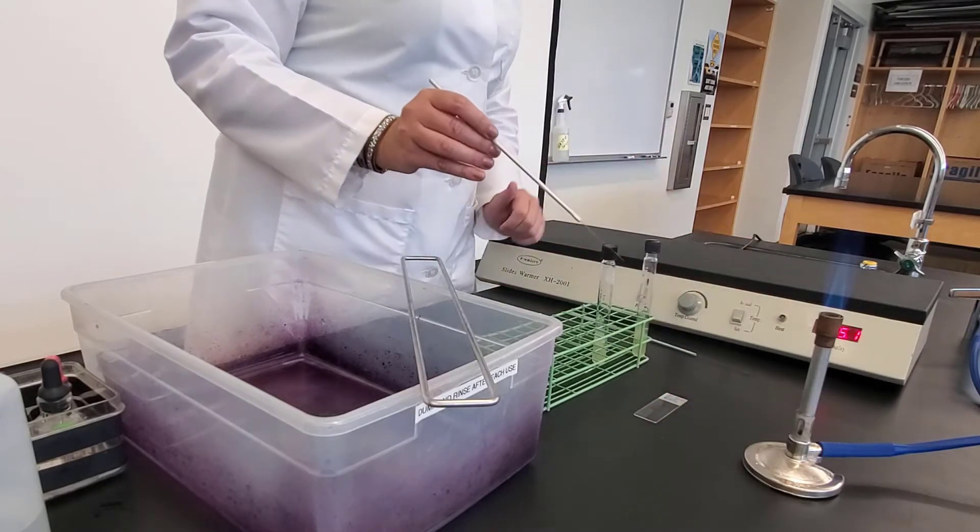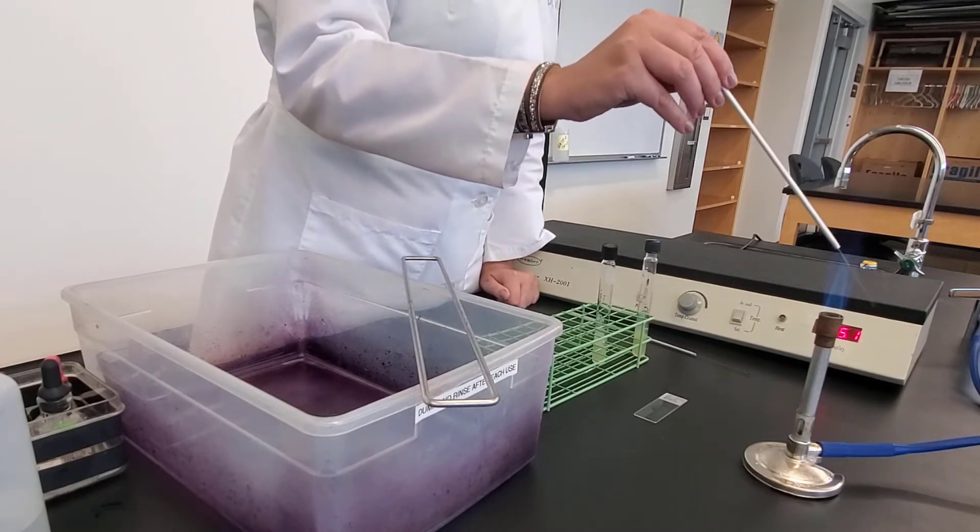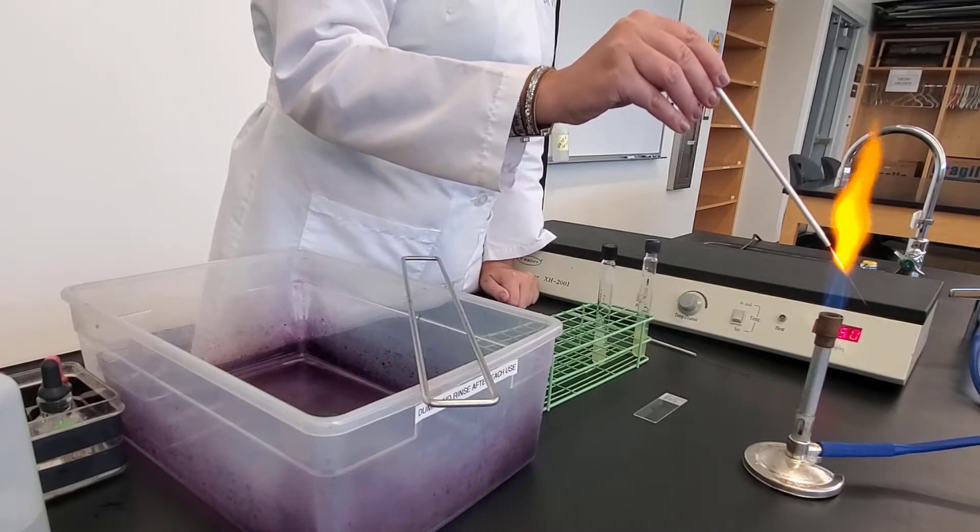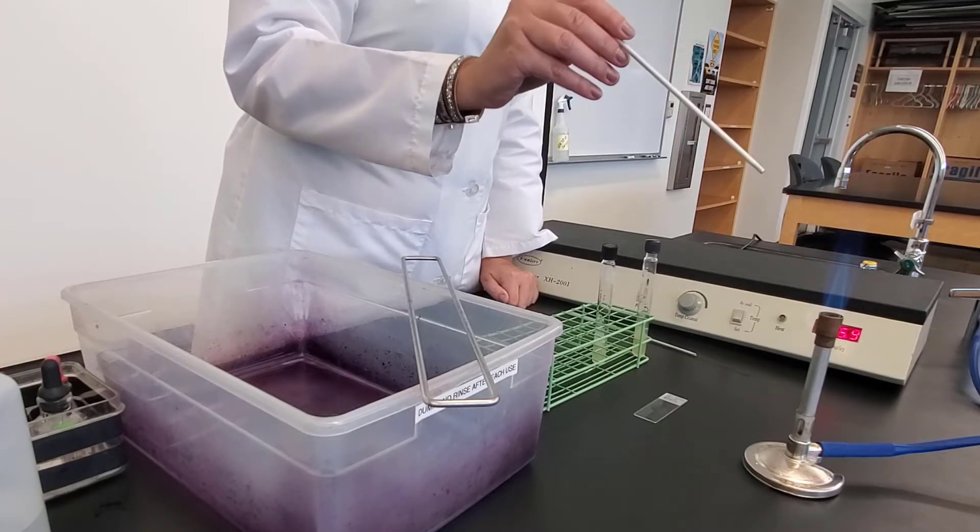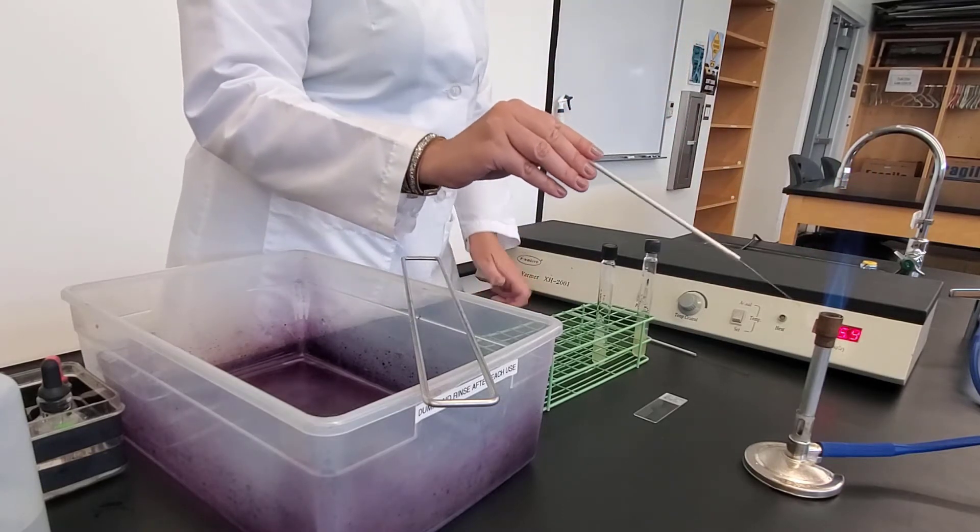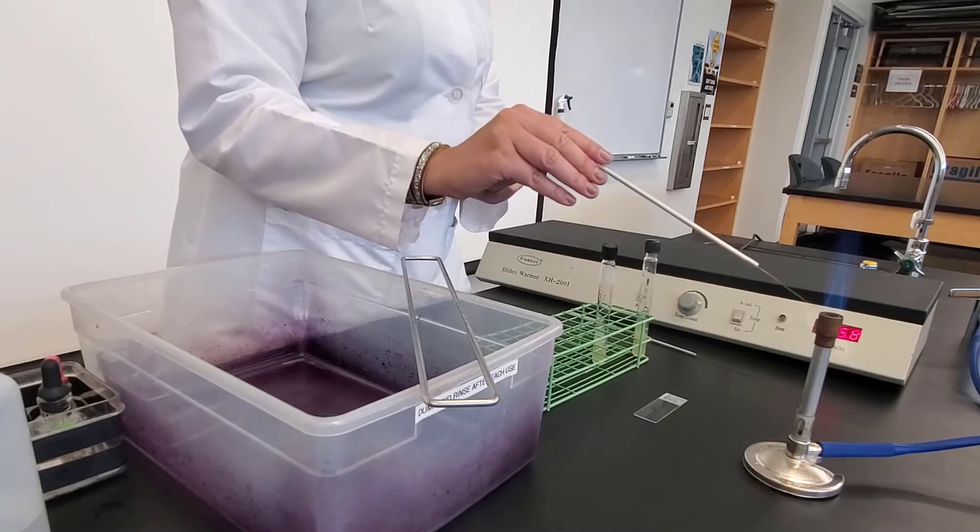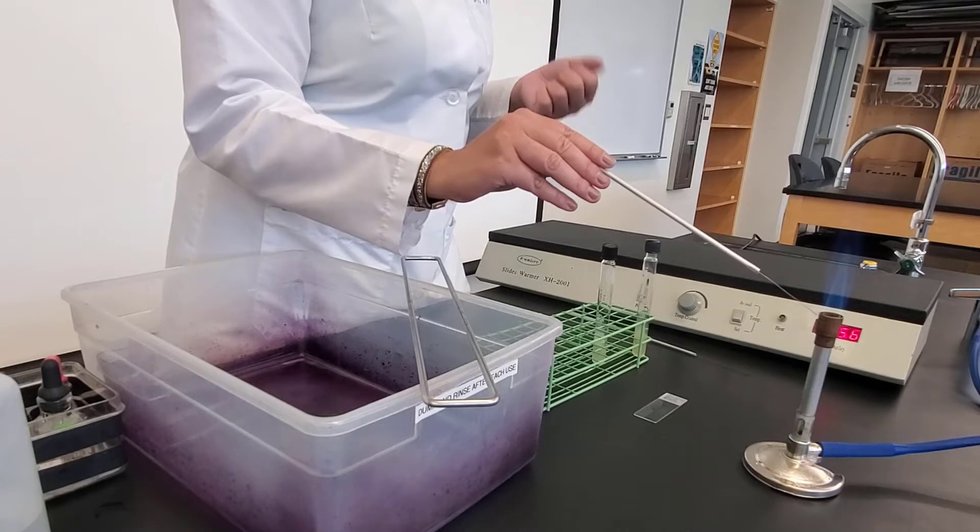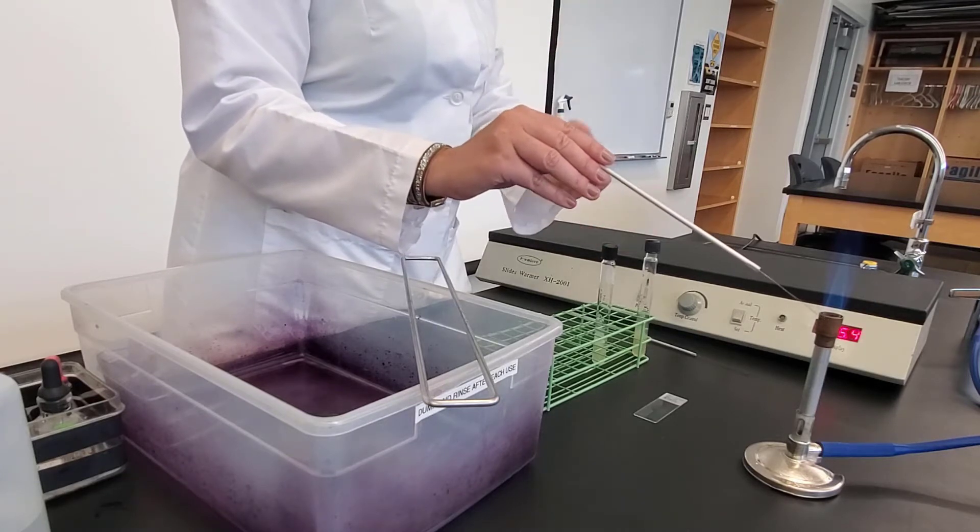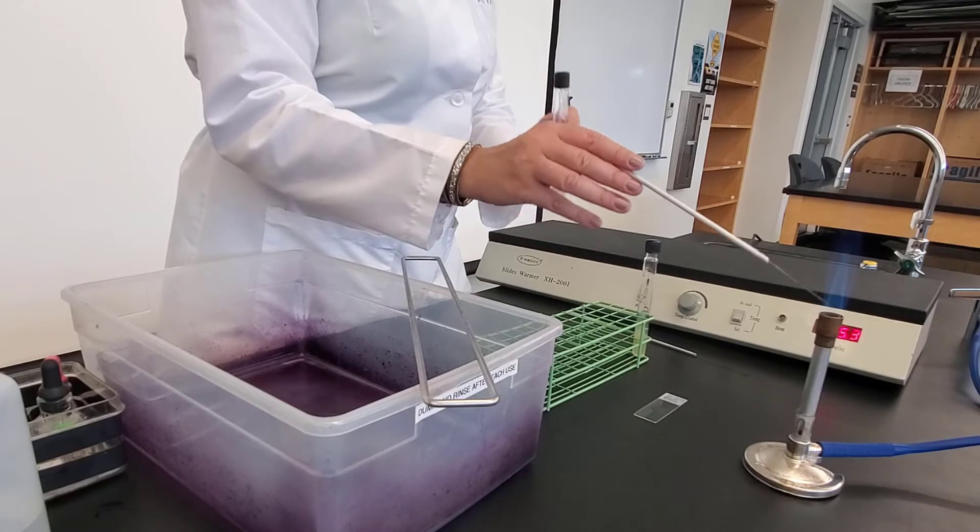So I've transferred one bacteria, so now I need to flame sterilize my needle again. And I'm going to let it cool. Next, I'm going to add my second bacteria. So again, in this experiment, we're using Citrobacter frontii and Staphylococcus epidermidis. So I've already added one. Now I need to add the other.